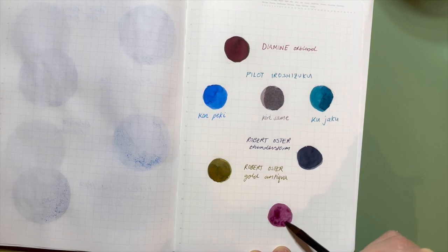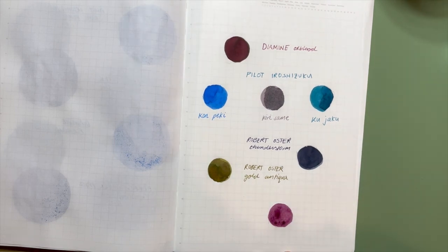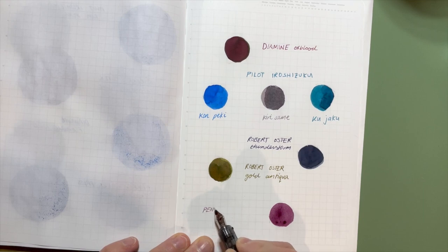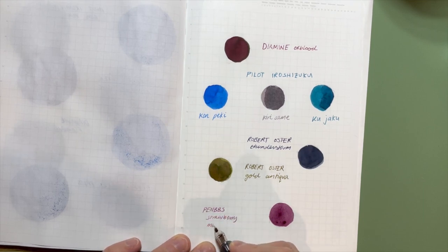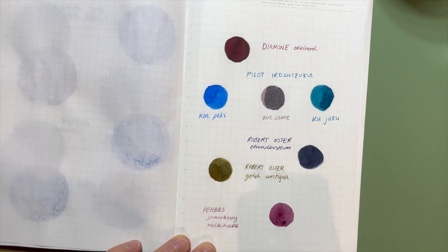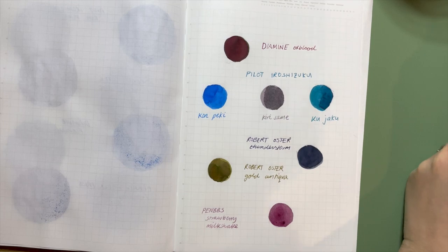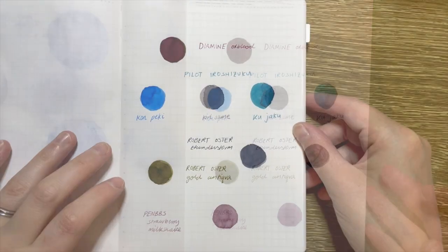Lastly on my list, I've included an ink that makes you smile. You know, one that makes you have fun. And for me at the moment, that is Penn BBS Strawberry Milkshake, purely because I just think it's a great name. It makes me smile. I had it inked up in a platinum preppy, and it was super fun to write with.